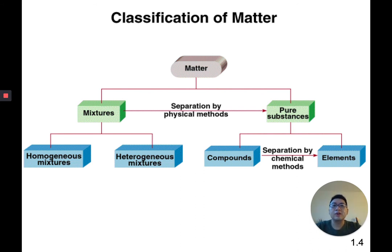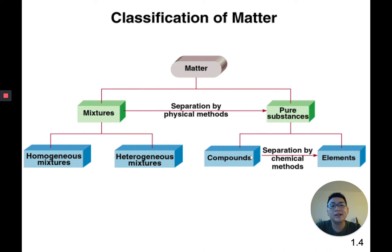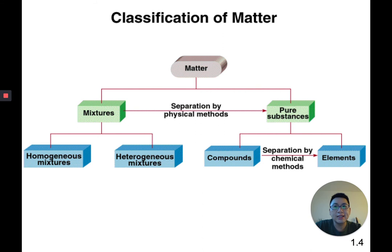So to summarize: matter is made up of mixtures or pure substances. Mixtures can be separated into pure substances by physical means and are either homogeneous or heterogeneous. Pure substances are classified as either compounds or elements. A compound is made up of two or more elements and can be separated by chemical means into elements. All these diagrams are found in the textbook in chapter one.